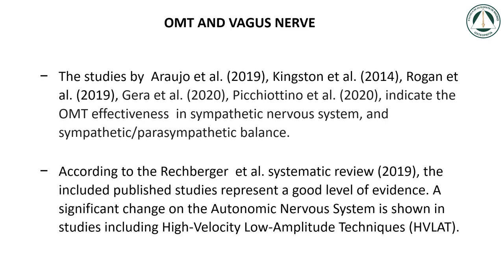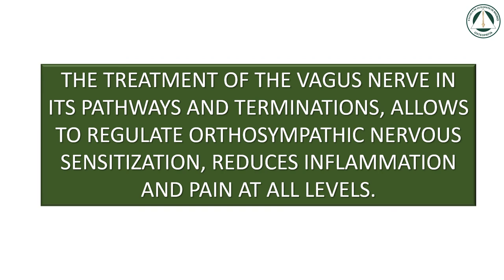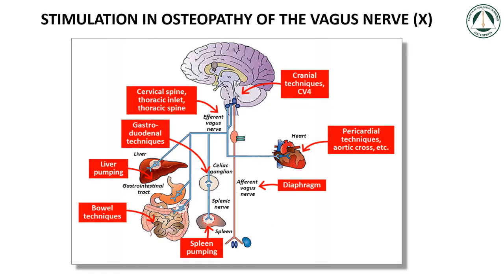The treatment of the vagus nerve in its pathways and terminations allows regulation of orthosympathetic nervous sensitization, reduces inflammation, and pain at all levels. In osteopathy, the stimulation and release of the pneumogastric nerve can be performed at various levels: cranial techniques, CV4, cervical spine, thoracic inlet, thoracic spine, pericardial, aortic cross techniques, diaphragm techniques, gastroduodenal techniques, spleen pumping, liver pumping, and bowel techniques.